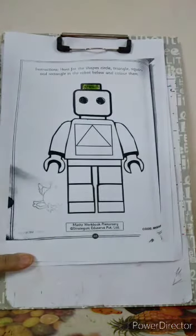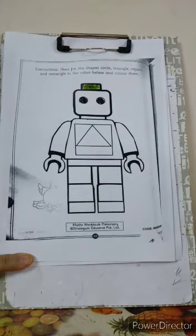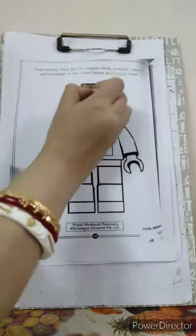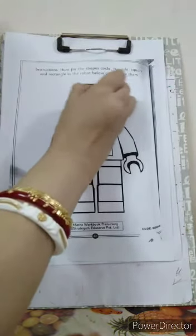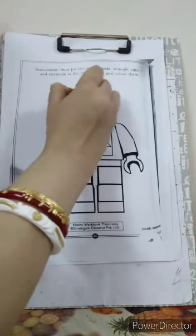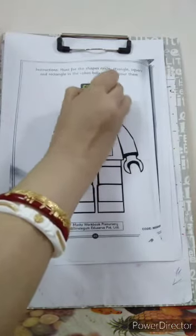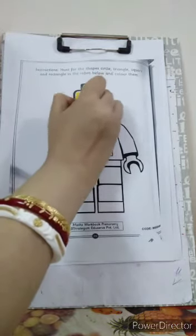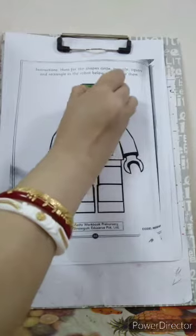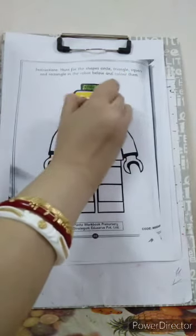Then next, square. We will color square. Which shape is this? This one, this one is in a square shape. This face is in a square shape. See? So let us color it, square.